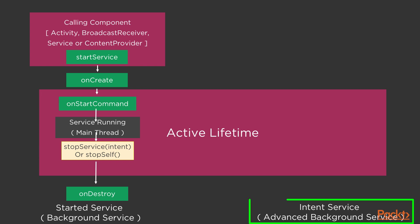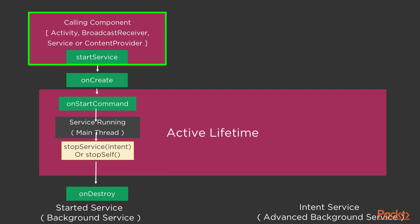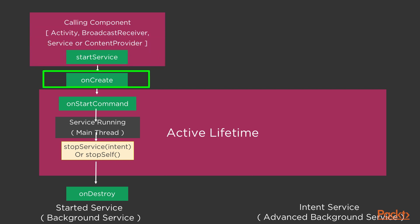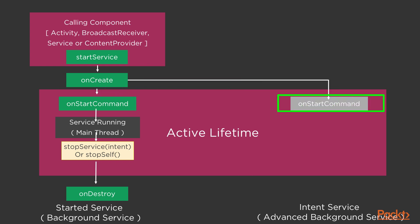The intent service is also known as the modified version or the advanced form of the background service. The lifecycle is almost similar. An intent service is also started by application components such as activity, broadcast receiver, service, or content provider. When we use the startService method, it simply triggers the onCreate method. After onCreate is executed, in case of intent service, the onStartCommand method is again executed.